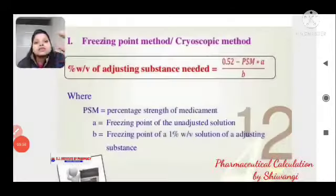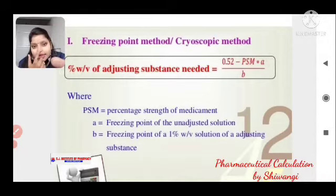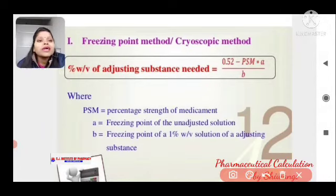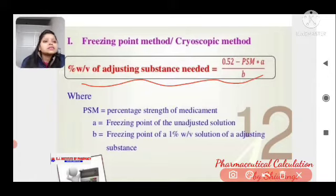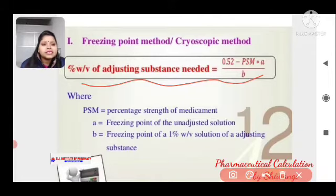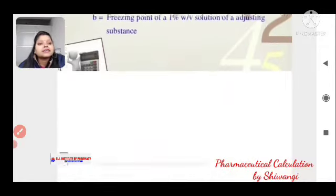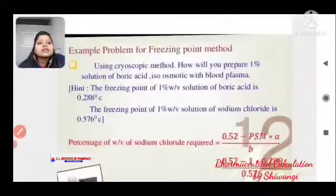The Freezing Point Method formula is: Percentage weight of adjusting substance = (0.52 − PSM × A) / B, where PSM is the percentage strength of medicament, A is the freezing point depression of the medicament solution, and B is the freezing point depression of a 1% w/v solution of the adjusting substance.